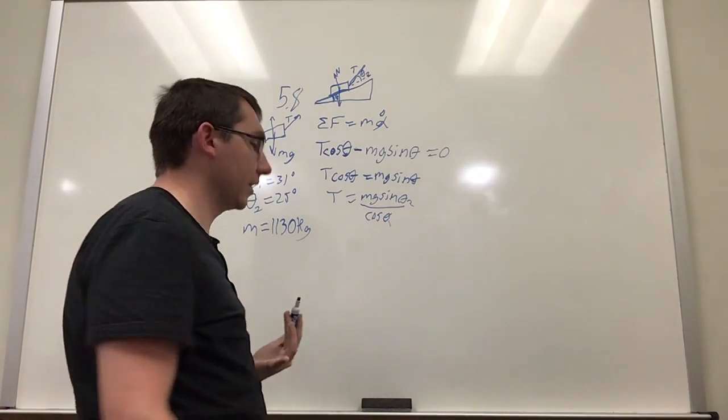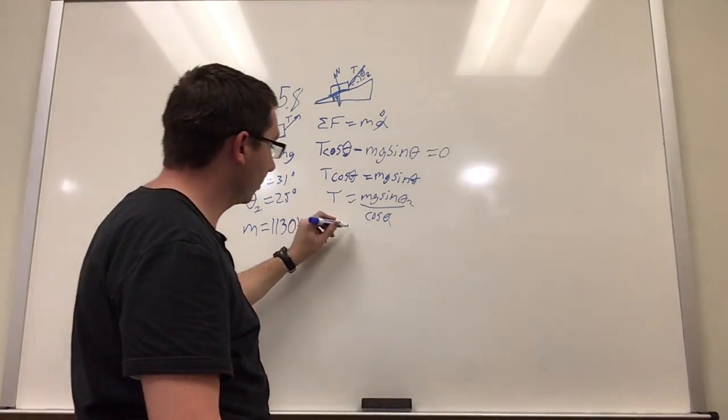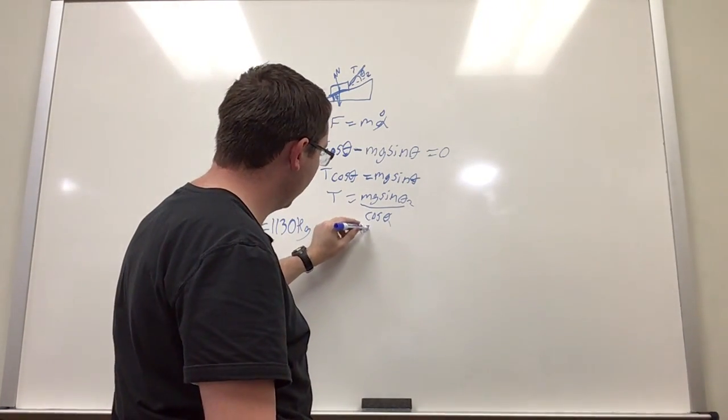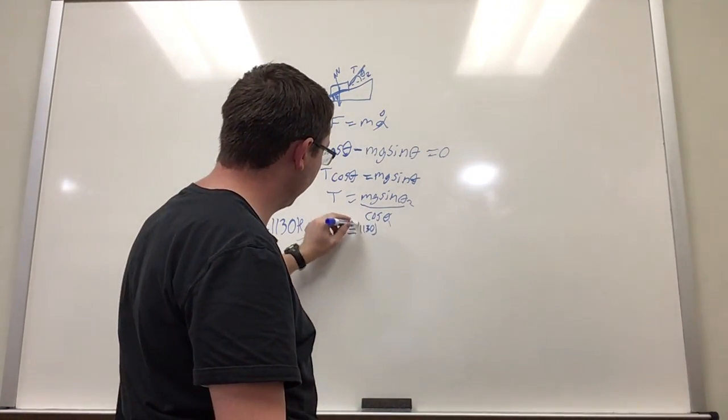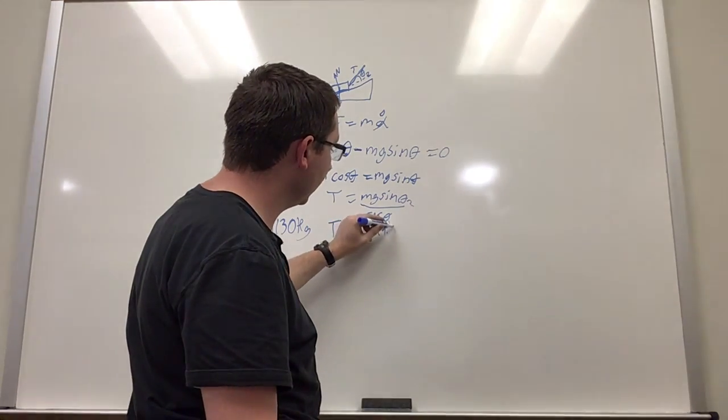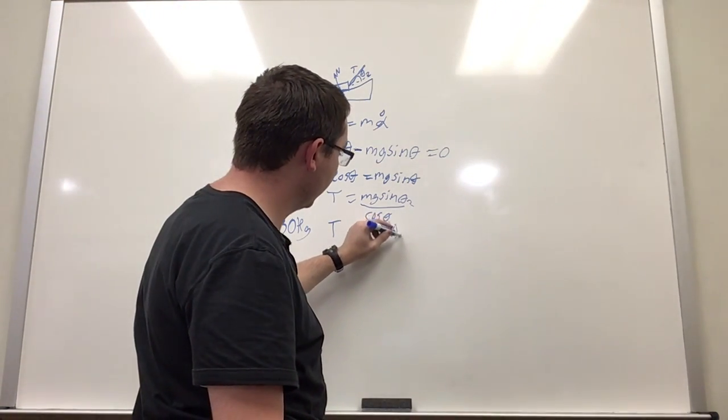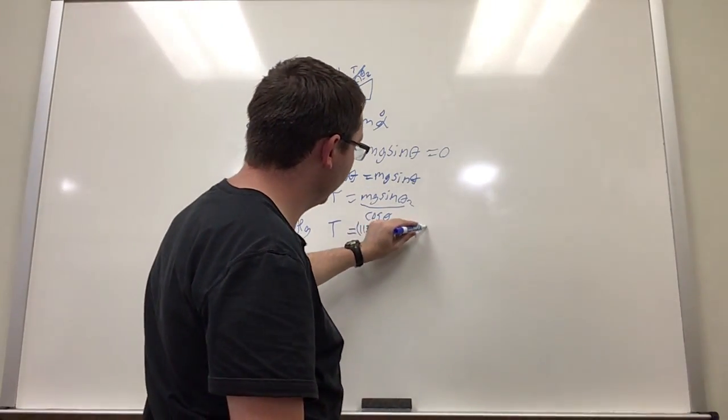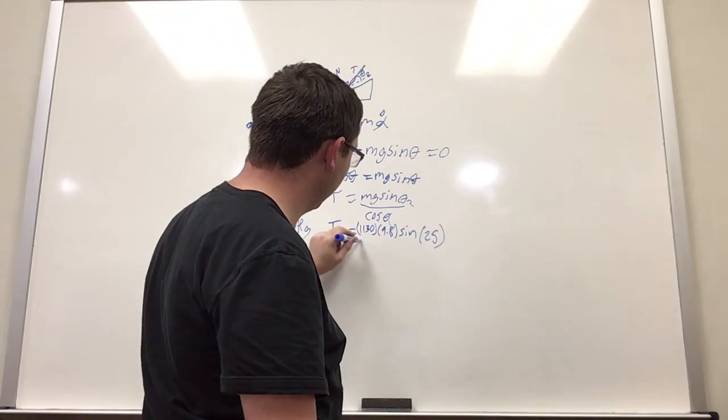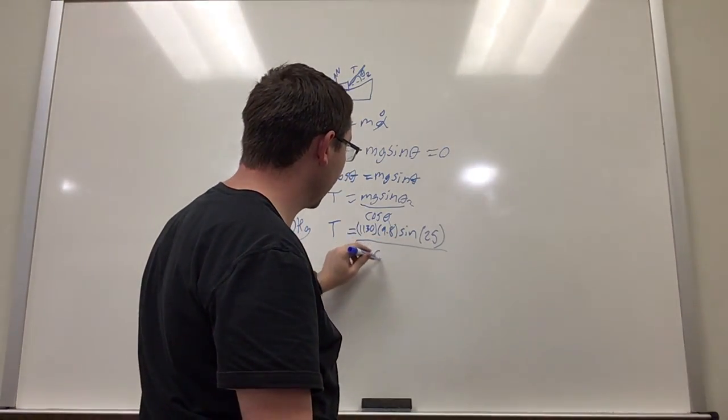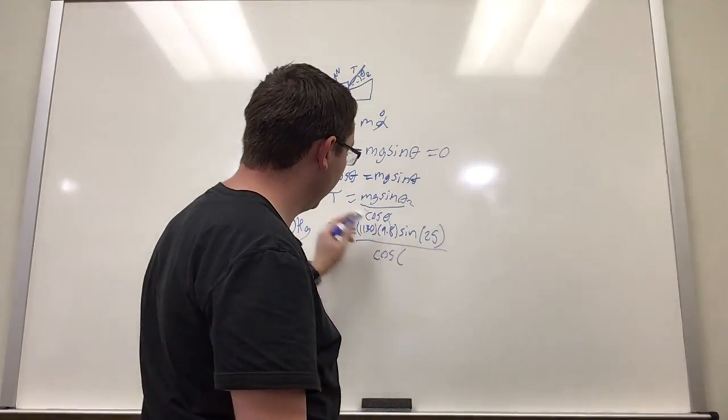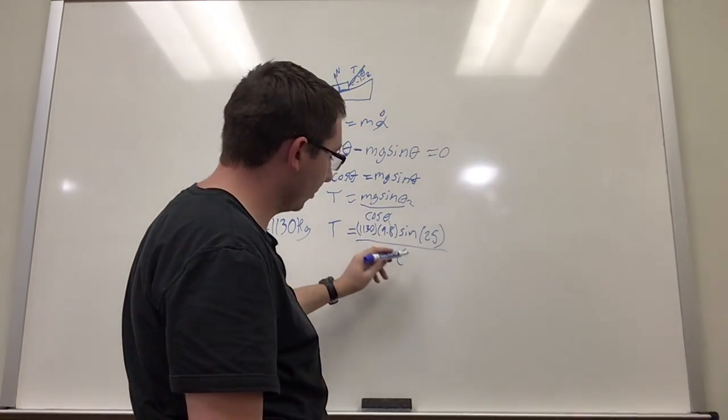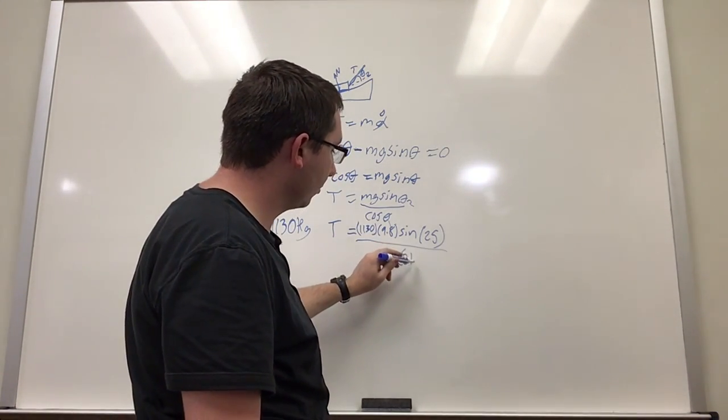And because these are two different angles, we can't combine them. But when you plug the numbers in, you get that the tension is going to be equal to the mass times gravity times sine of the angle of the ramp, so 25 degrees, and all of that is going to be divided by cosine of the angle for the cable, which is 31 degrees.